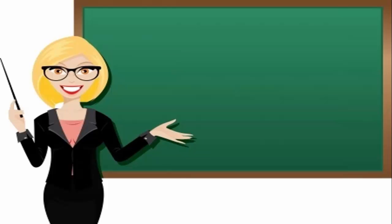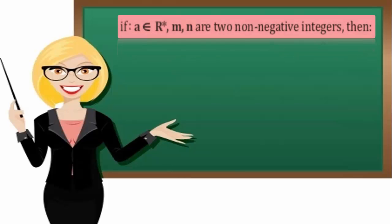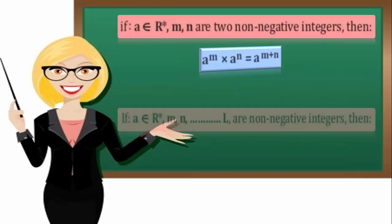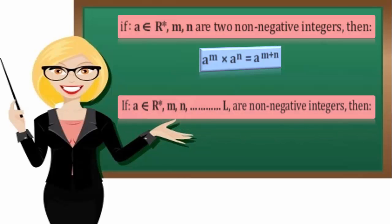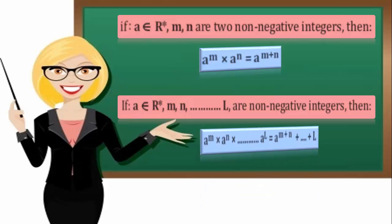Number 1: If A belongs to R star, and M and N are two non-negative integers, then A to the power M times A to the power N equals A to the power M plus N. In general, if A belongs to R star and M, N, L and so on are non-negative integers, then A to the power M times A to the power N times A to the power L equals A to the power M plus N plus L, and so on.